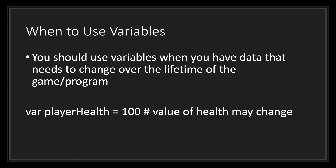Let's quickly go over when you need to use variables. You should use variables when you have data that needs to change over the lifetime of the game or program. For example, a variable called player_health with an assigned literal integer value of 100 — the player's health may change over time. As you can see, the player health's value is not a constant.